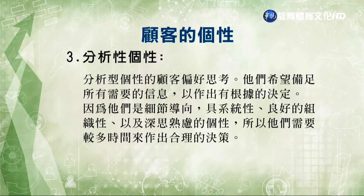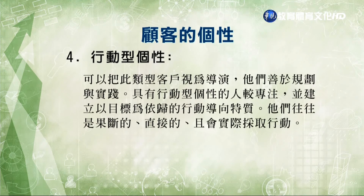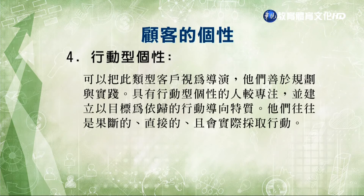第三個是分析型顧客，偏好思考，希望有足夠的資訊讓他們根據資訊來做決策，所以他們是細節導向的，具系統性、良好的組織性以及深思熟慮的個性，需要較多時間來做理性決策，個性傾向於內向。第四種是行動型個性，可以把此類個性視為導演，他們善於規劃跟實踐，較為專注，建立一個目標依歸的行動導向特質，往往是果斷的、直接的並且會實際採取行動，具有內在動力來獲得成功，想要立刻得到答案並快速做決定，通常講話速度比較快、不囉嗦。